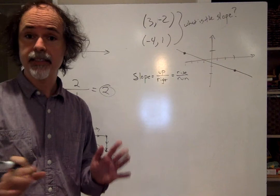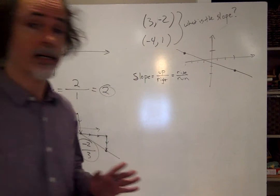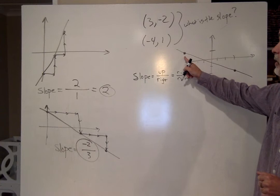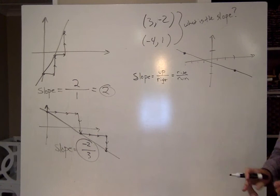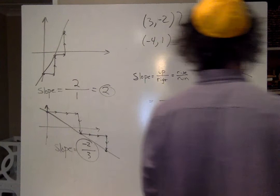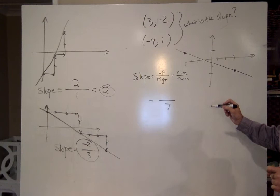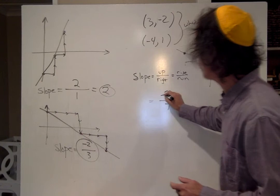And like I said, always just work left to right. It makes life a lot easier. I started at negative 4. I ended at positive 3. How far did I go to the right? Yes, I went 7 to the right. How far did I go up? I started at 1, and I ended up at negative 2. How far did I go up? Yes, I went up negative 3.